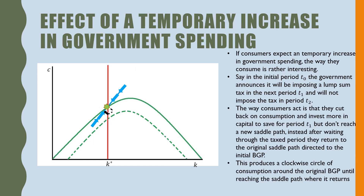If consumers expect a temporary increase in government spending, their behavior is rather interesting. Say at initial period t0, the government announces it will impose a lump-sum tax in the next period t1 but not in t2. Consumers cut back on consumption and invest more in capital to save for period t1, but don't reach a new saddle path. After the tax period they return to the original saddle path directed toward the initial BGP, producing a clockwise circle of consumption around the original BGP point.